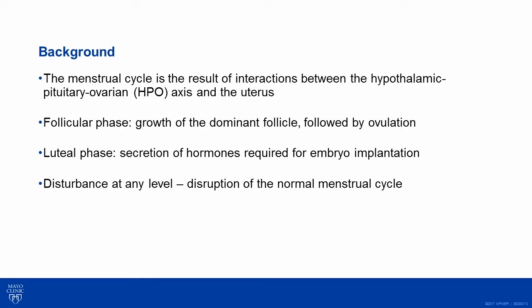Regarding the background and physiology of the menstrual cycle, we know it is the result of a complex interaction between the hypothalamus, the pituitary gland, the ovaries, and the uterus. It is divided into two phases: the follicular phase, where we see the growth of the dominant follicle followed by ovulation, and then the luteal phase, where the uterine lining gets ready for implantation. If that doesn't happen, menstrual bleeding occurs.